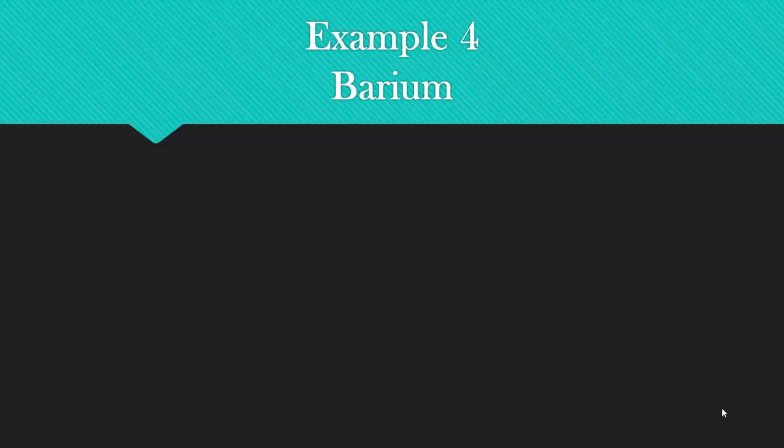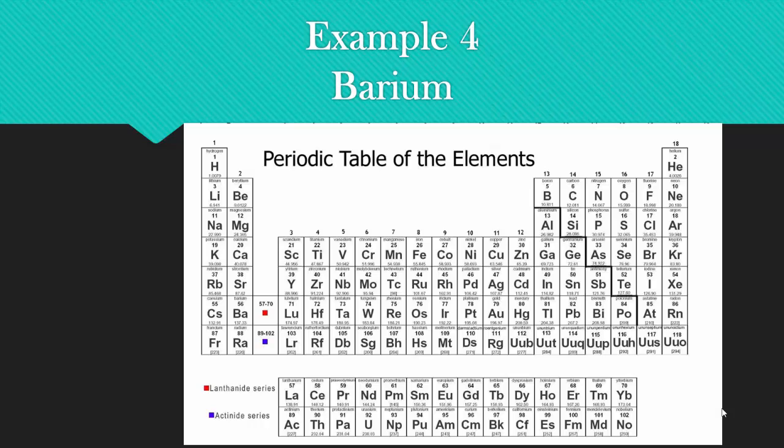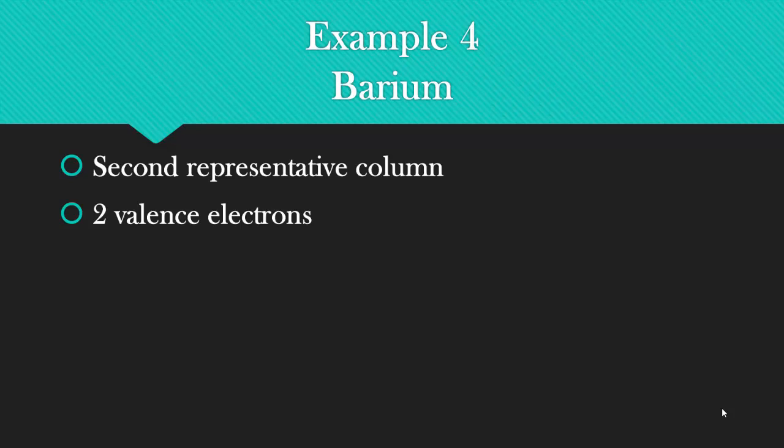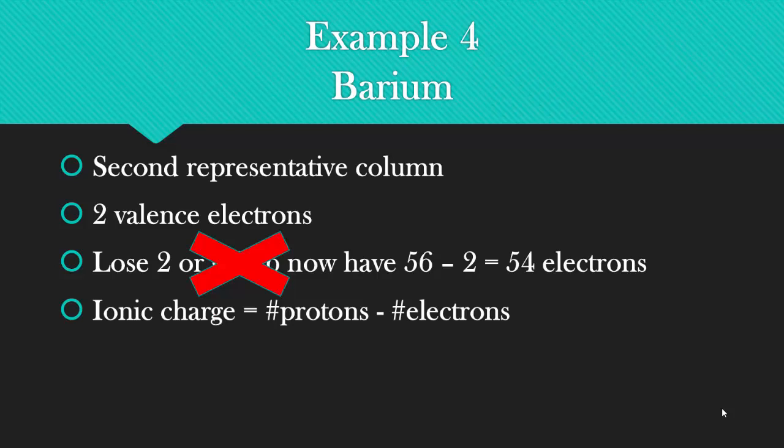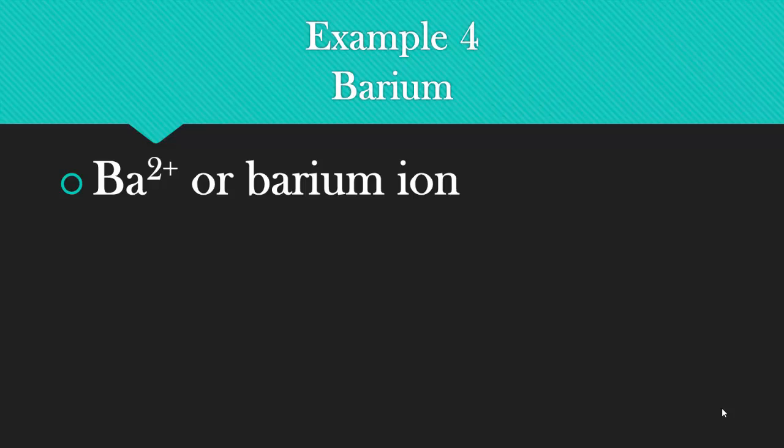The correct answer is Ba2 plus or the barium ion. How did we get that? First, we identify barium on the periodic table, and we see that it's here, an atomic number of 56. It's in the second representative column. It means it has two valence electrons. Lose two or gain six. Obviously two is less than six, so we're going to lose two. So now we have 54 electrons. We're going to calculate the ionic charge. We get 56 minus 54 is plus two. So we have the barium two plus or the barium ion.